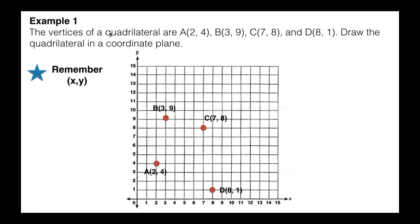We've plotted our vertices, and now I need to draw the quadrilateral. This is pretty simple — all you're doing is connecting the dots, but you have to do it in order. I'm going A to B, then B to C, then C to D, and then finally D back to A. And there is my quadrilateral — four sides, it's a closed figure.